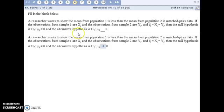And so our null hypothesis is that the mean of all these differences is zero. And so our alternative hypothesis is going to be, based on what we want here in the first sentence, the researcher wants to show the mean from population one is less than the mean from population two.